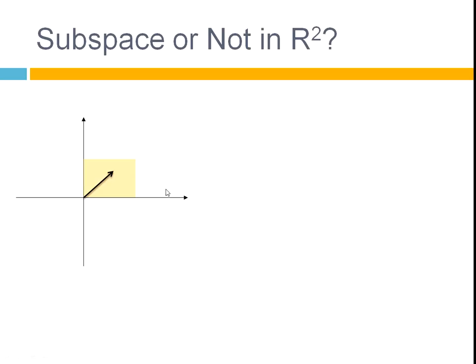And is this a subspace? So, think of the rules. Here's a vector. Here's another vector. Both of those vectors are in that subspace. Can we add those two vectors and still be in the subspace? No. That there is not in the subspace. So, it doesn't satisfy that criteria.